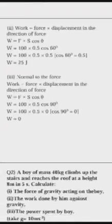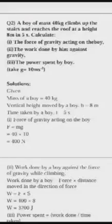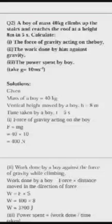Moving ahead to the next problem. A body of mass 40 kg climbs up the stairs and reaches the roof at a height of 8 meter in 5 seconds. Calculate the force of gravity acting on the boy. So force of gravity is F = m × g. M is 40 kg, G given in the question is 10. So 40 × 10 is 400N. Work done by him: work done is F × S. You have got F, S is 8. So 400 × 8 you will get 3200 Joules.